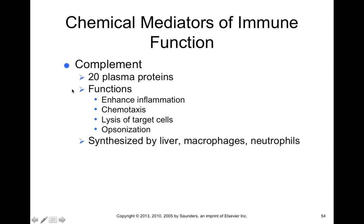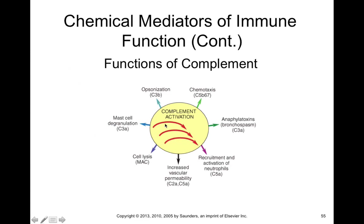Some aspects of your innate immune response include what we call complement. Complement includes 20 different plasma proteins, synthesized mostly by the liver, macrophages, and neutrophils. These proteins have important roles in the innate immune response: they enhance inflammation, can lyse or break apart target cells, attract other immune cells to a site of infection, and target foreign cells for removal. Normal liver, macrophage, and neutrophil function are needed to produce sufficient complement proteins.